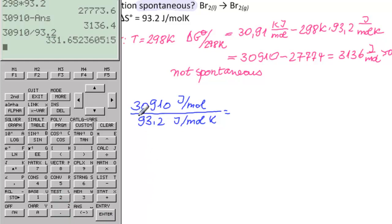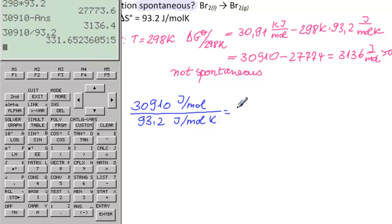That equals 331.7 Kelvin. So at 298 it was not spontaneous. At 331.7, Delta G theta becomes zero. So our answer is: